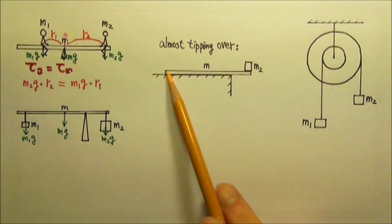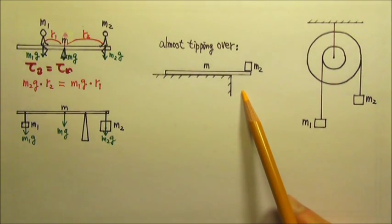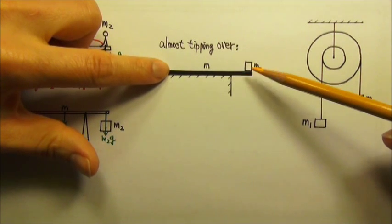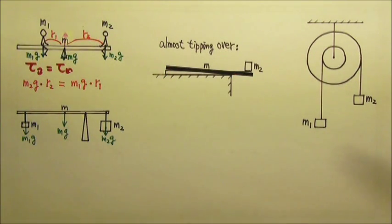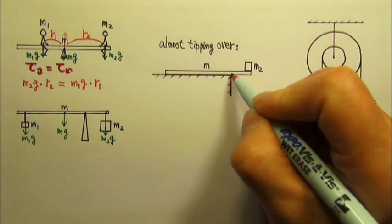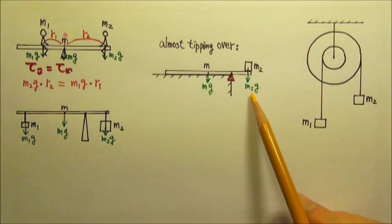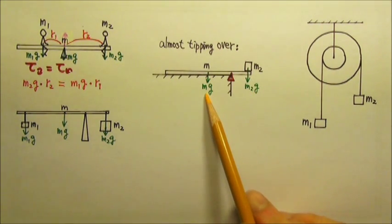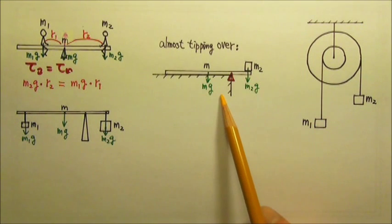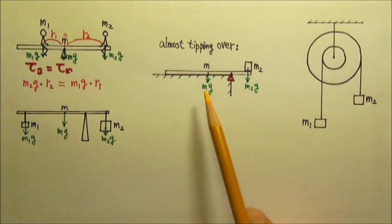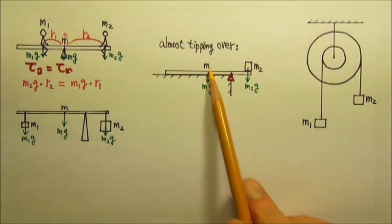If we have something like this where the beam is almost going to tip over, it is still like a seesaw problem. If the beam is almost going to rotate about the corner of the table, it's convenient to use the corner of the table as the fulcrum. M2g produces clockwise torque and the mg of the beam produces counterclockwise torque. Since it's almost going to tip over, we treat it as a static equilibrium case: clockwise torque equals counterclockwise torque, so M2g times its lever arm equals mg times its lever arm.